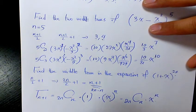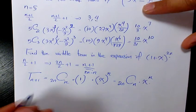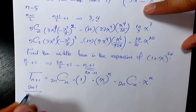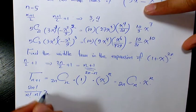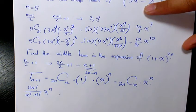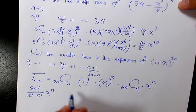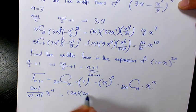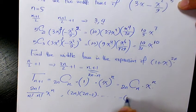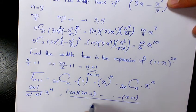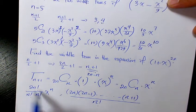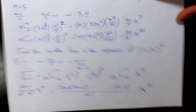Expanding further, 2nCn · x^n equals (2n)! / (n! · n!) times x^n, which is [2n × (2n−1) × ... × (n+1)] / n! times x^n. So that is the final answer for this question.